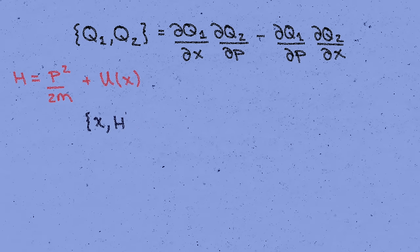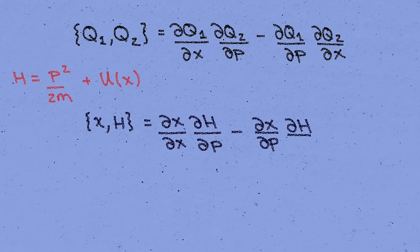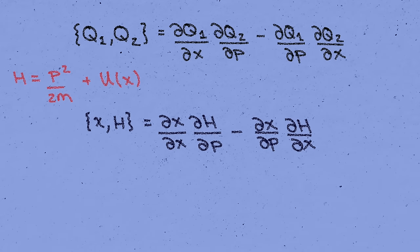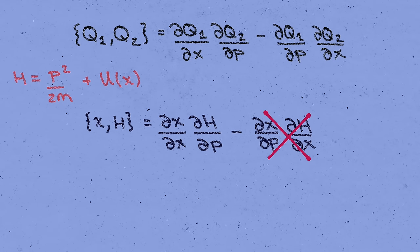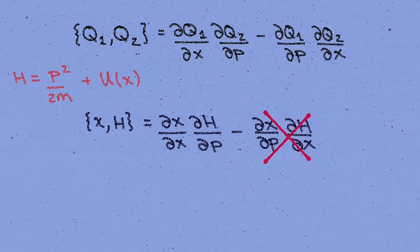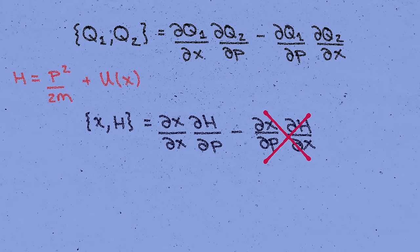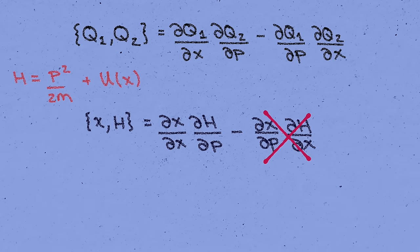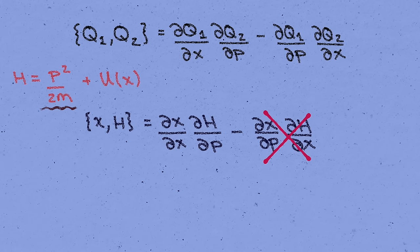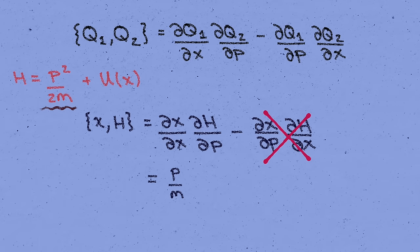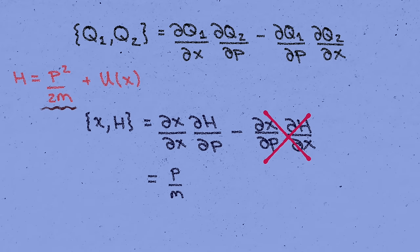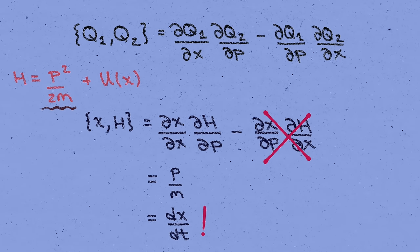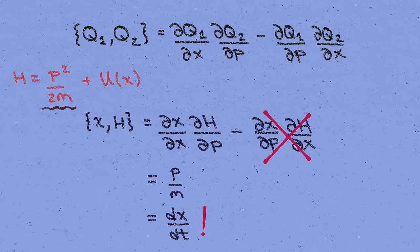What's the Poisson bracket of x with h? We get dx by dx times dh by dp minus dx by dp dh by dx. This time it's the second term that vanishes, because the derivative of x with respect to p is 0. Then in the first term, the derivative of x with respect to itself is 1, and the derivative of h with respect to p comes from the kinetic energy term in the Hamiltonian, p squared over 2m. So we get p divided by m for that derivative. But that's just the velocity of the particle, dx by dt. So we've obtained a similar relation, that the rate of change of x is equal to its Poisson bracket with the Hamiltonian.